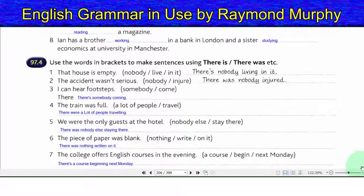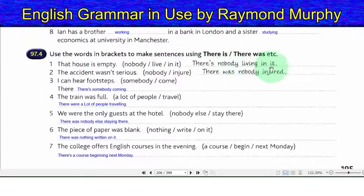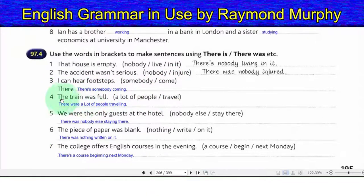97.4. Use the words in brackets to make sentences using 'there is,' 'there was,' etc. One: that house is empty, nobody lives in it — there is nobody living in it. Two: the accident wasn't serious, nobody was injured — there was nobody injured. Three: I can hear footsteps, somebody is coming — there's somebody coming.